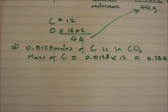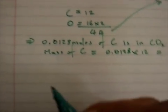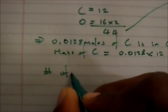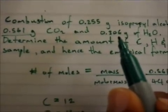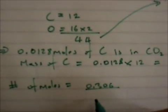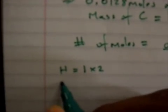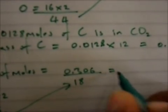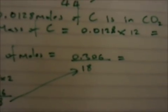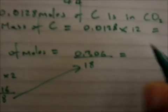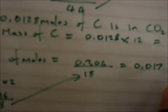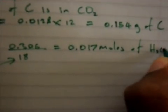Now we calculate the number of moles for hydrogen. The number of moles equals mass over molar mass, and we note that hydrogen is only found inside the water. The mass of water is 0.306 grams, and water has a molar mass of 18, because hydrogen is 1 times 2 and oxygen is 16. So 0.306 divided by 18 gives 0.017 moles of H₂O.